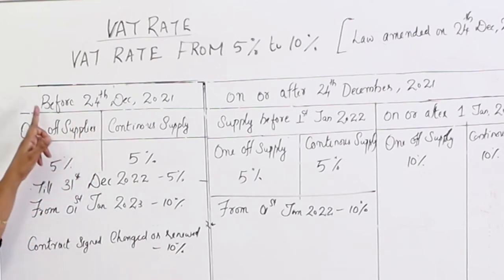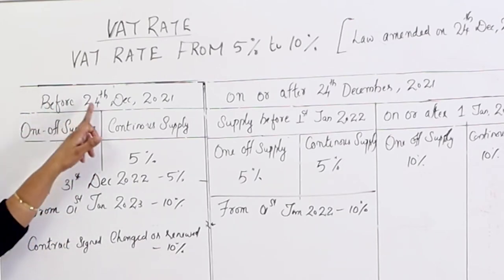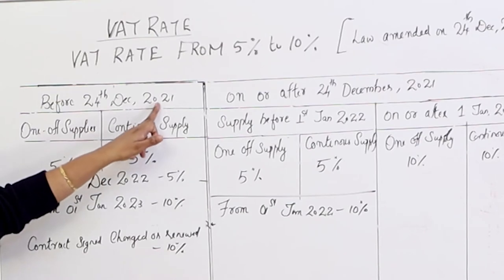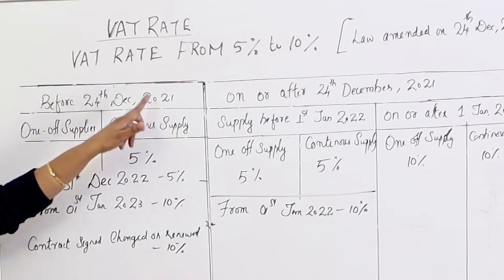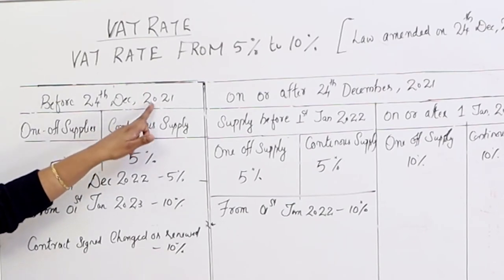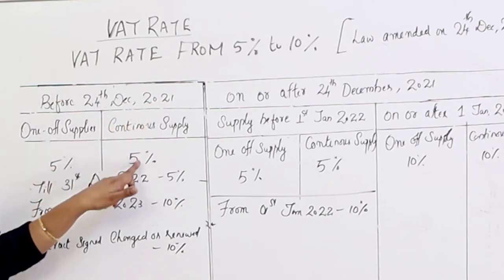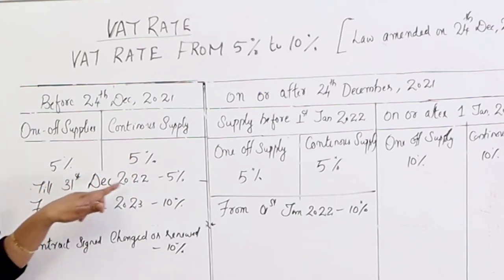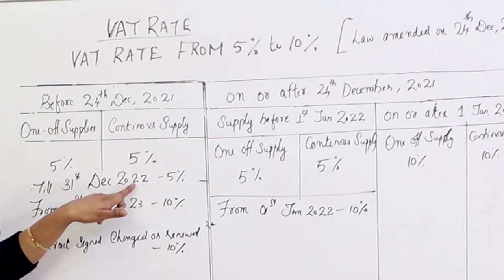In that category, supply is either one-off supply or continuous supply. One-off supply means we have a single invoice. Continuous supply means we are giving multiple invoices — it is like a continuous supply. So for contracts signed before 24 December 2021, the rate is 5% until 31 December 2022.